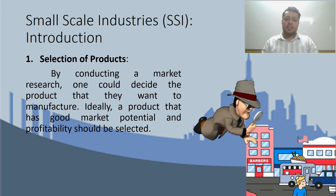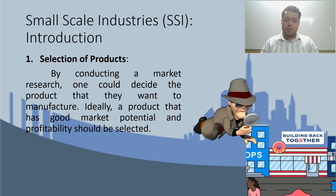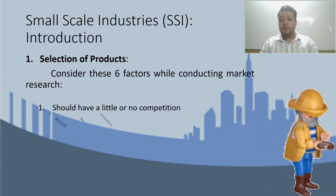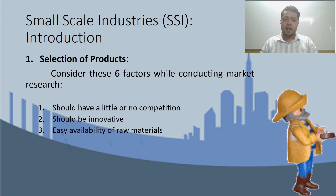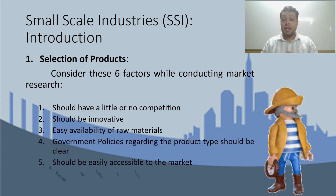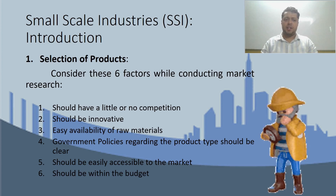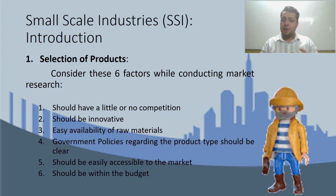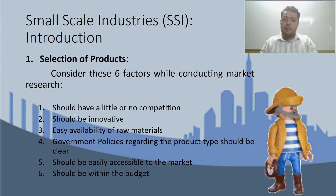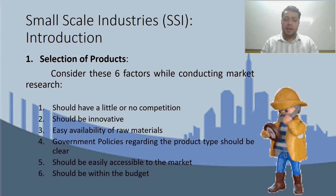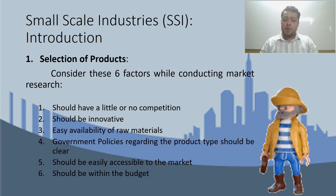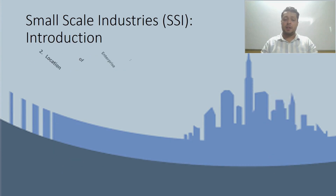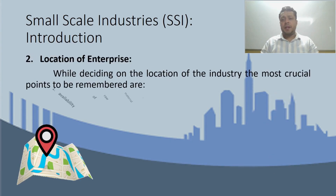Ideally, you should choose a product with good market potential and high profitability. During market research, six factors are very important to keep in mind: first, choose a product with little or no competition; the product should be innovative; the raw materials required to produce it should be easily available; government policies regarding the product should be clear; the product should be easily accessible in the market; and its manufacturing should be within our budget.